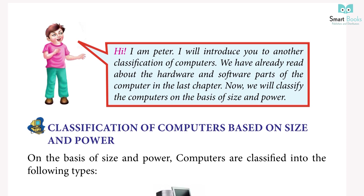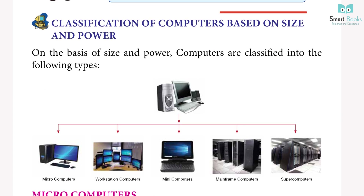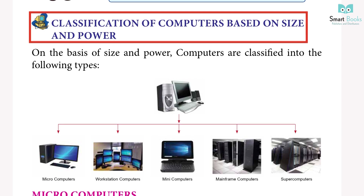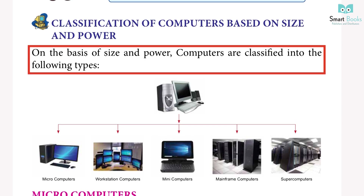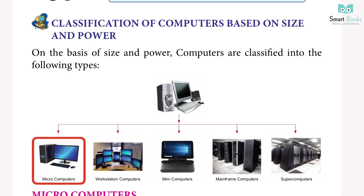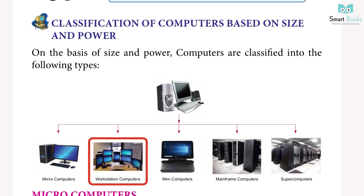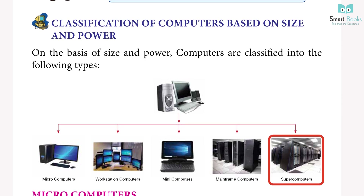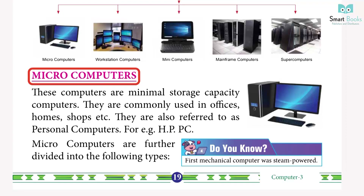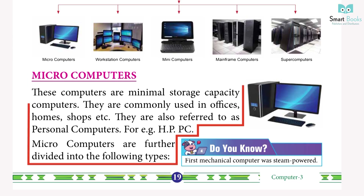We have already read about the hardware and software parts of the computer in the last chapter. Now we will classify computers on the basis of size and power. On the basis of size and power, computers are classified into the following types: microcomputers, workstation computers, mini computers, mainframe computers, and supercomputers.